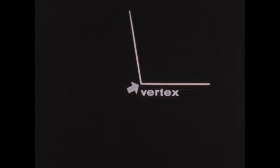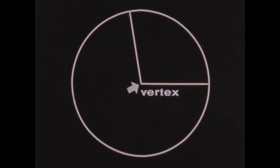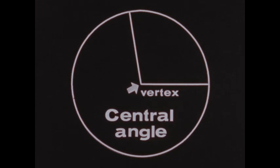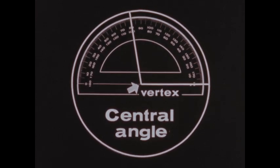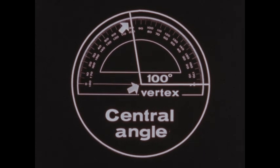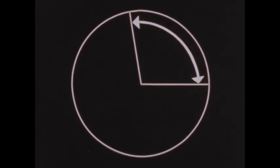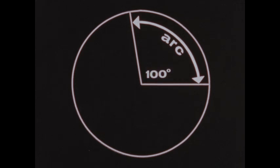When the vertex of an angle is at the center of a circle, the angle is given a special name. This kind of angle is called a central angle. We measure central angles the same way as other angles. This central angle measures 100 degrees. This portion of the circle is the intercepted arc of the central angle. The intercepted arc always contains the same number of degrees as the central angle. So, since this central angle measured 100 angular degrees, its intercepted arc will contain 100 arc degrees.